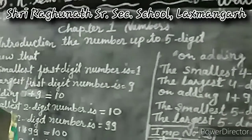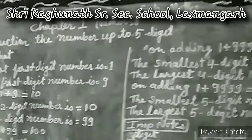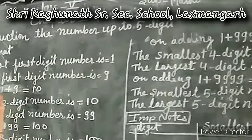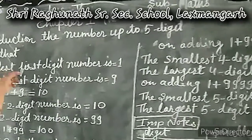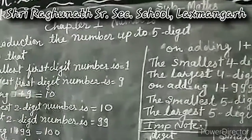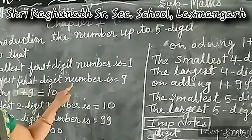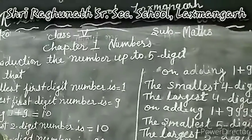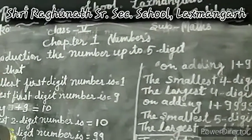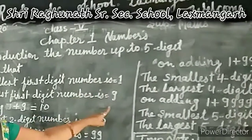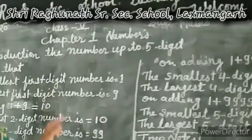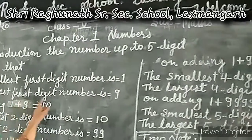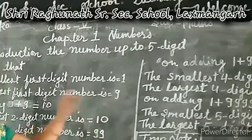In the previous class, the smallest one-digit number is one. The largest one-digit number is nine, because one-digit numbers are from one to nine. The smallest number is one and the greatest number is nine. So, one digit's smallest number is one and the largest one-digit number is nine.